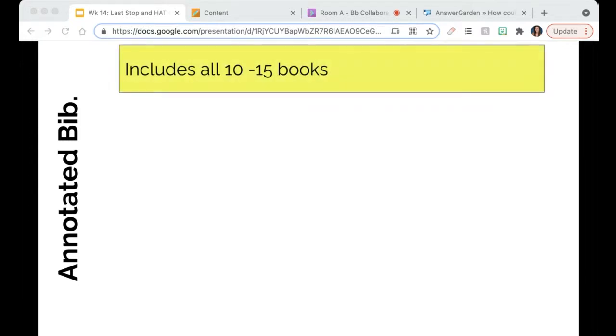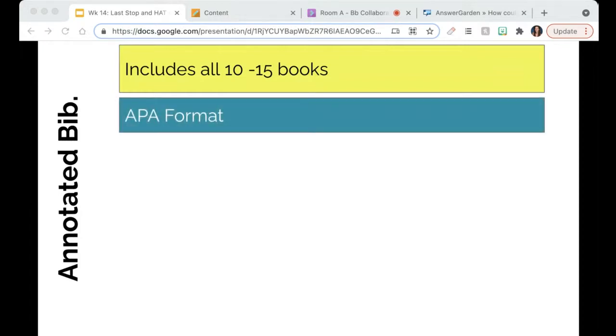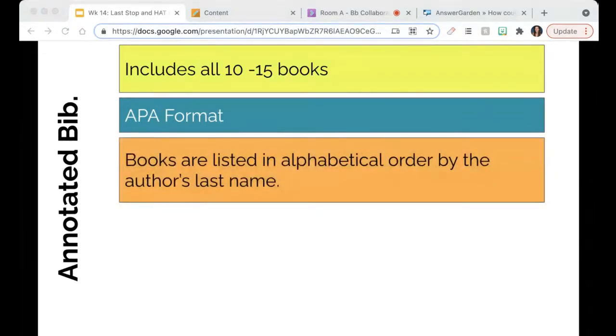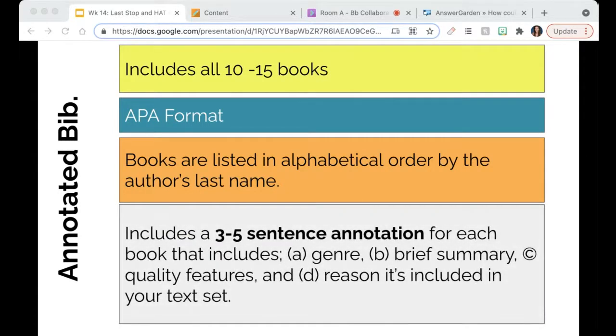Now, let's talk about the annotated bibliography. We've all done an annotated bibliography, and a lot of us have already started that annotated bibliography and we're halfway through. Your annotated bibliography needs to include all 10 to 15 books in your collection. It should be written in APA format, so that citation is in APA format. If you are in education, then APA is going to be your go-to. Books are going to be listed in alphabetical order by the author's last name.